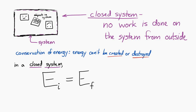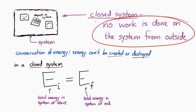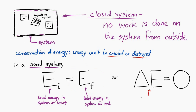That means this is true: EI equals EF, where EI represents the total energy in the system at the beginning and EF represents the total energy in the system at the end. If you have a system with a certain amount of energy, and energy can't be created or destroyed inside, and you aren't adding or removing any energy because it's closed, then the total energy at the beginning must equal the total energy at the end. Another way to say that is the change in energy of the system equals zero.